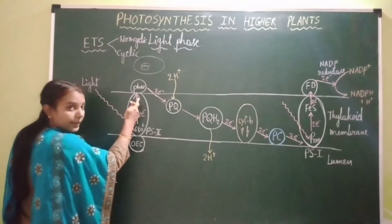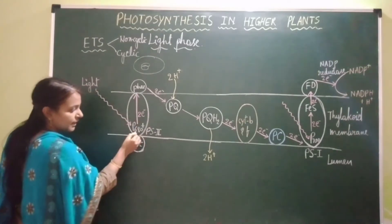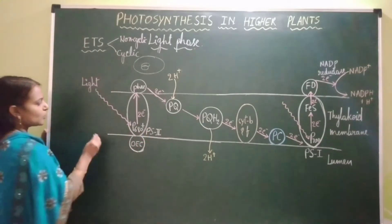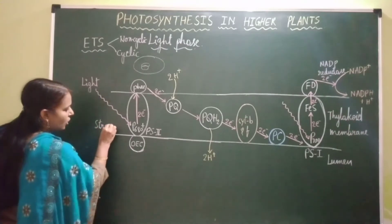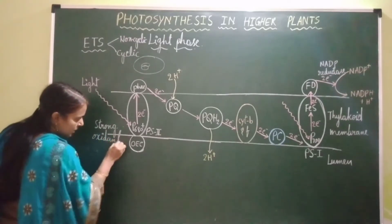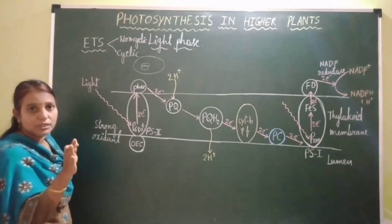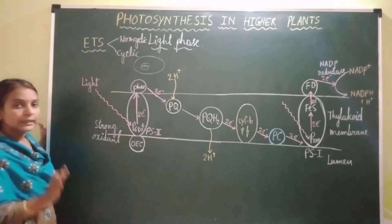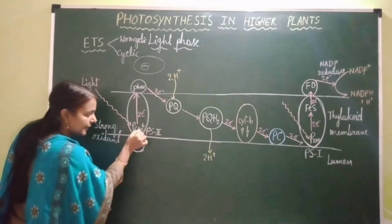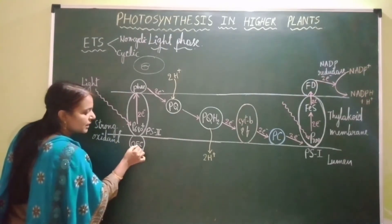When the light photon is absorbed, 2 electrons are extruded. When the electrons are excited, the reaction center of Photosystem 2 acquires positive charge and becomes a strong oxidant. As a strong oxidant, it can oxidize the water molecule present inside the OEC — oxygen evolving complex.